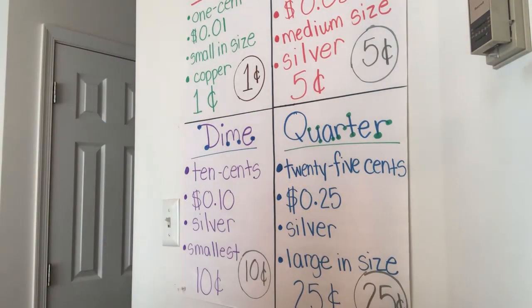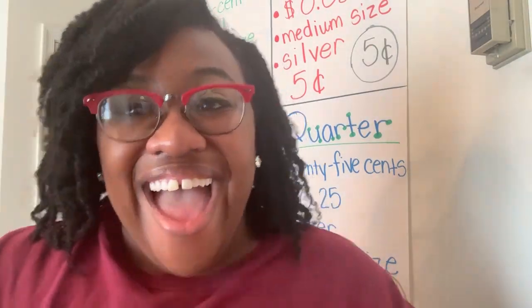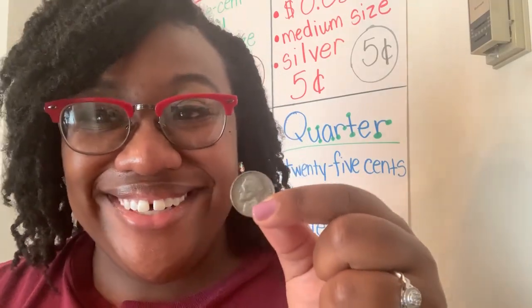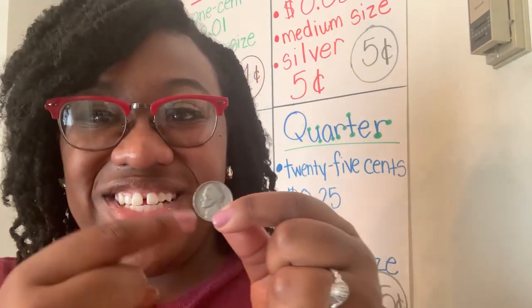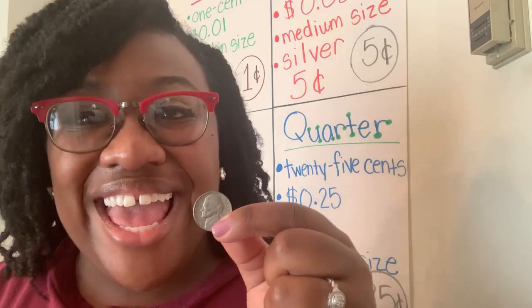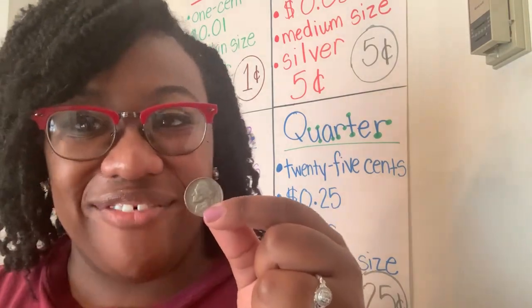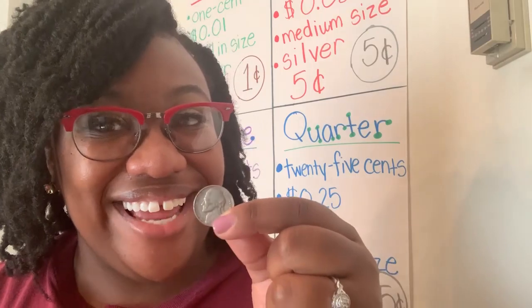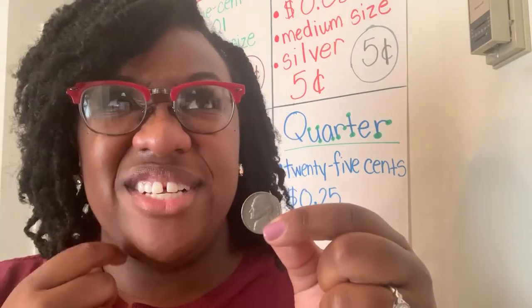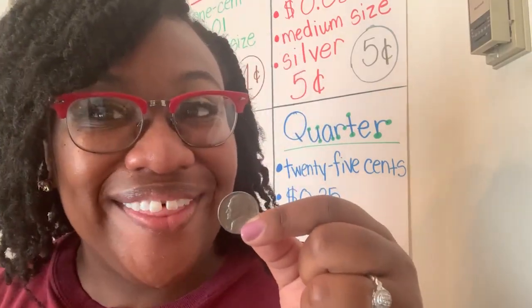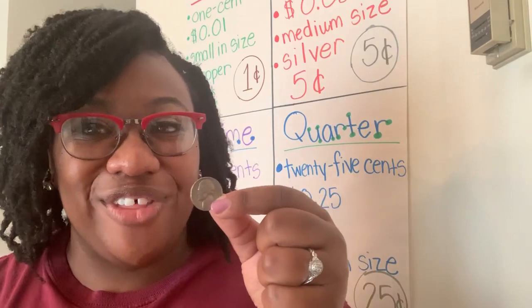Our next coin is the nickel. Our nickel is a silver coin, medium size, and it has our third president on it — President Thomas Jefferson. He is on our head. Our nickel is worth five cents — let's count to five: one, two, three, four, five. So our nickel is worth five cents.